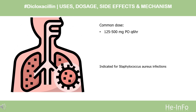Dose. For Staphylococcus aureus infections, the indicated dose is 125 to 500 mg PO every 6 hours. Take on an empty stomach.